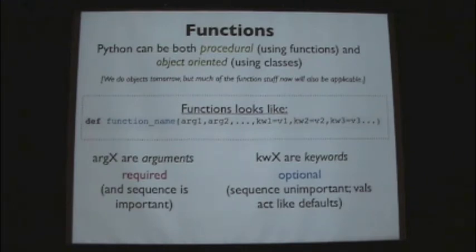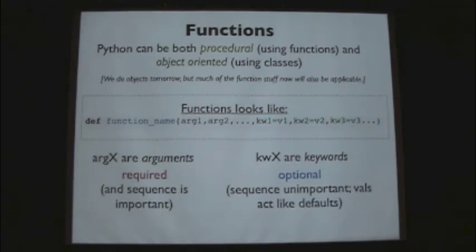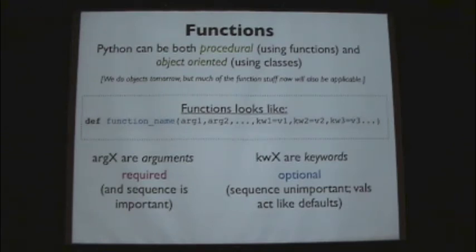What do functions look like? They have 'def' in front, which is essentially the defining of that function. You have a function name, then arguments — there can be as many or as few arguments as you'd like. When an arg is declared inside the function definition, it is required. If somebody calls this function and passes only one variable when two are needed, there'll be an error.